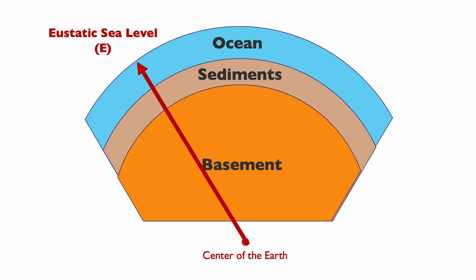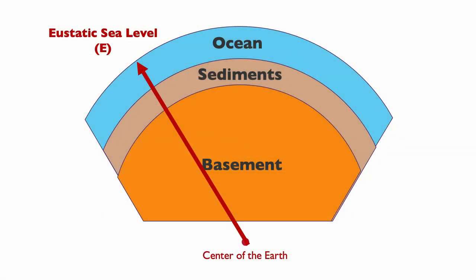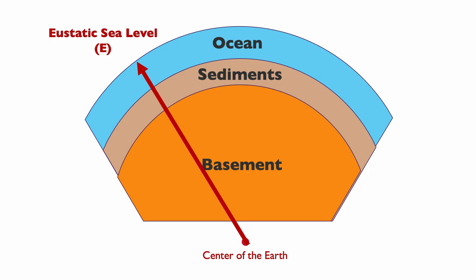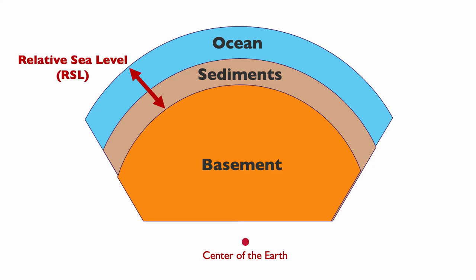We can also speak about eustasy, eustatic sea level, or absolute sea level — these terms are equivalent. Eustasy is defined as the distance between the center of the earth and the top of the water column. We also recognize relative sea level, which is the distance between the top of the basement and the top of the water column. Eustatic sea level and relative sea level are measured relative to different datums — that's a very important concept.